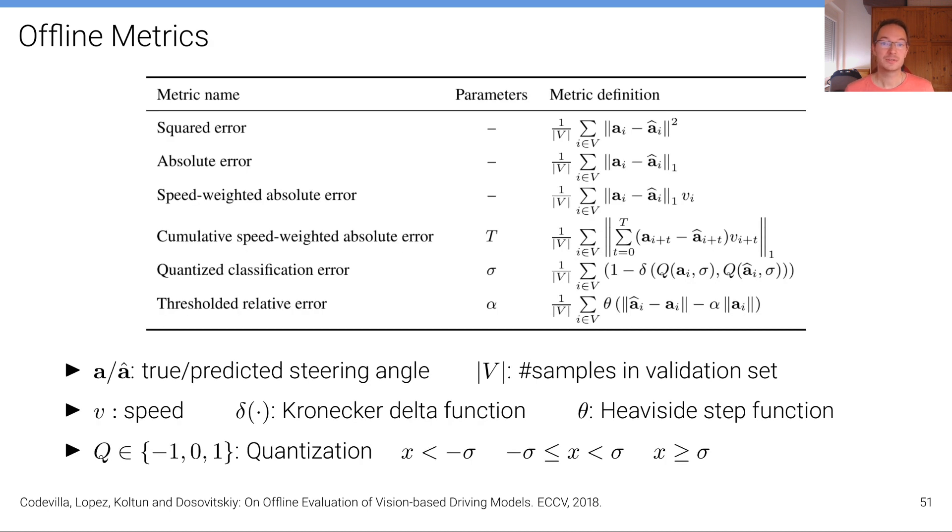The offline metrics that are considered here, these are the proxies for the online metrics that people often use. In this paper here they only consider the steering angle. You could also consider acceleration but this article is only investigating the difference between online and offline metrics with respect to the steering angle. So A is either the true or A hat is the predicted steering angle. And the metrics they consider, the offline metrics, is the squared error. So how does the true steering angle A deviate from the predicted steering angle in terms of its square.